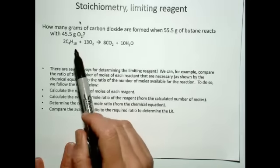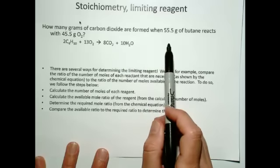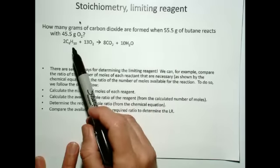In this particular type of question, it goes like this: How many grams of carbon dioxide are formed when 55 grams of butane reacts with 45.5 grams of oxygen?